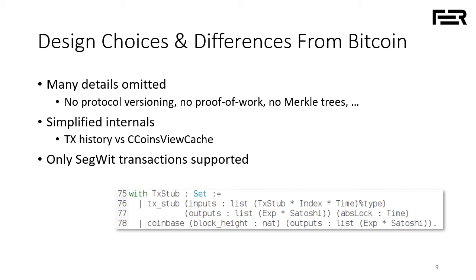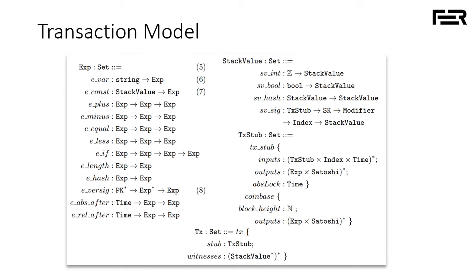Currently Bitcoin supports legacy transactions, where witnesses are inside the references to outputs, and so-called segregated witness transactions, where witnesses are stored separately from transaction stubs. We only support the second case. If you look at the current Bitcoin network, about 60% of transactions are SegWit transactions, so that was the primary use case we wanted to cover at this point.